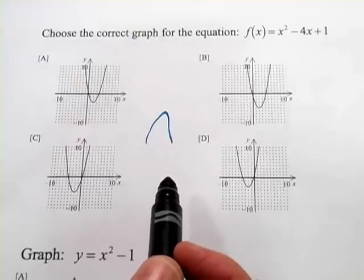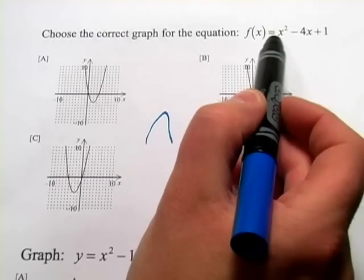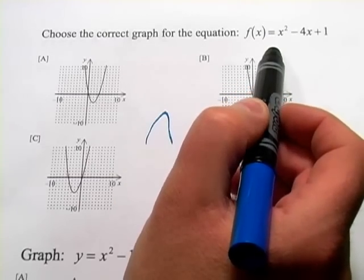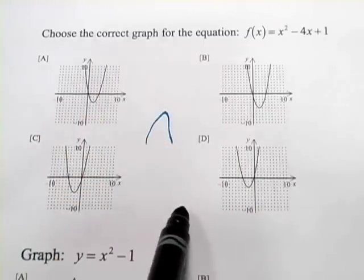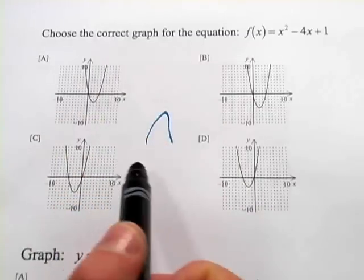There are some shortcuts you should know about. One of them, of course, is to look at the coefficient of the X-squared term. If it's positive, you know it's going to be upward-opening. In this one, we don't have any choice, so we can't eliminate those. They're all upward-opening.